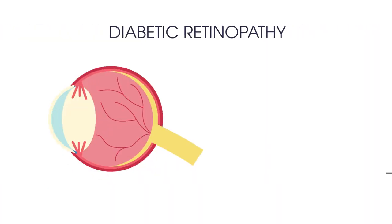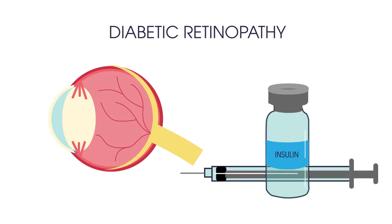Finally, diabetic retinopathy which is a complication of diabetes caused by high blood sugar levels damaging the retina. The retina needs a constant supply of blood which it receives through a network of tiny blood vessels.